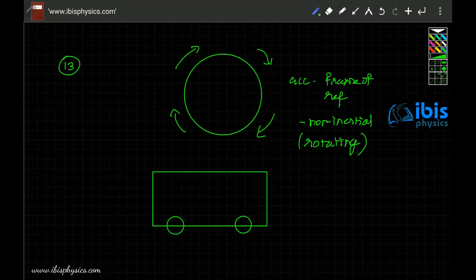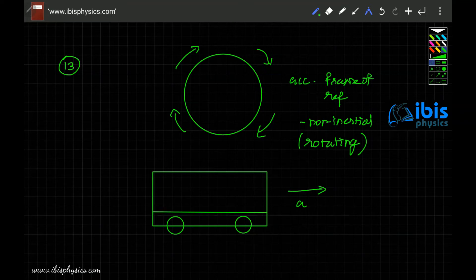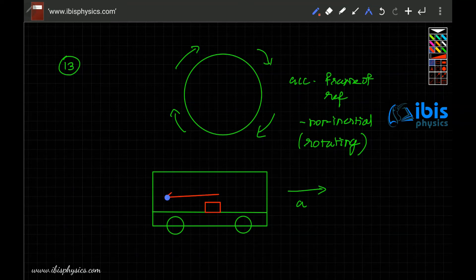A bus going forward with some acceleration is also an example of an accelerating frame of reference, but it is not rotating. When the bus accelerates, a box inside tends to slide backward.